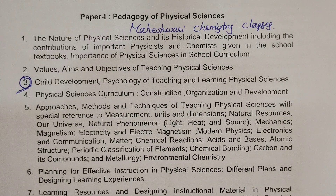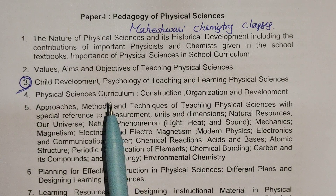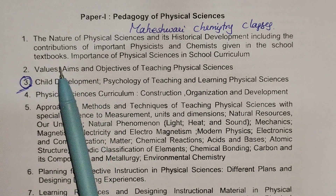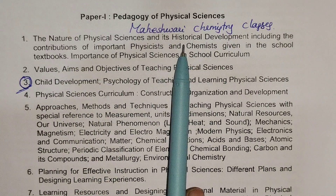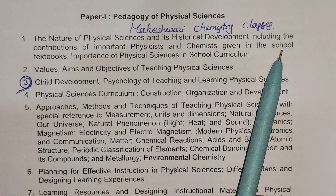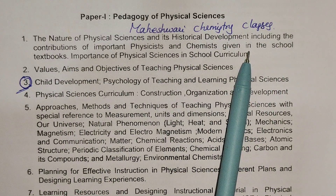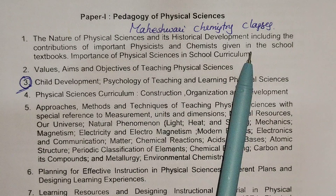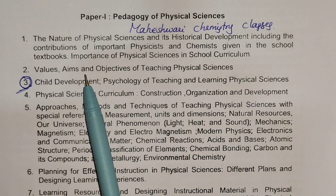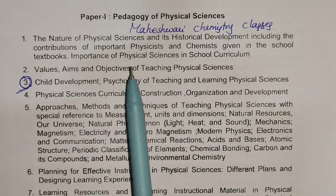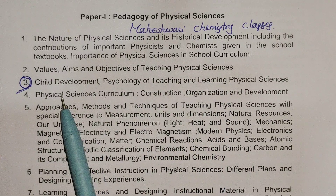Let's get started. Topic 1 is the Nature of Physical Sciences and Historical Development. This is the easiest topic. The next topic is Values, Aims, and Objectives of Teaching Physical Sciences.